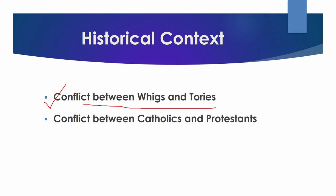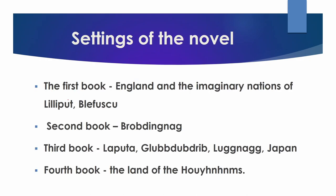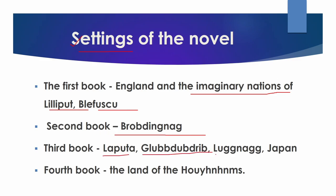Gulliver's Travels is divided into four books, each set in various remote locations. The first book is set in the imaginary nations of Lilliput and Blefuscu. The second book is set in Brobdingnag. The third book describes his voyage to Laputa, Glubbdubdrib, Luggnagg, and Japan. The last book is set in the land of the Houyhnhnms.